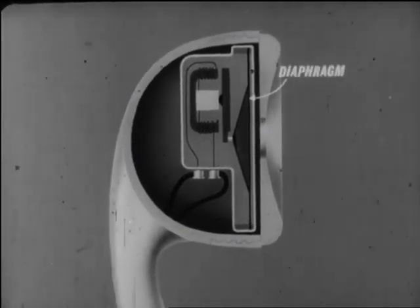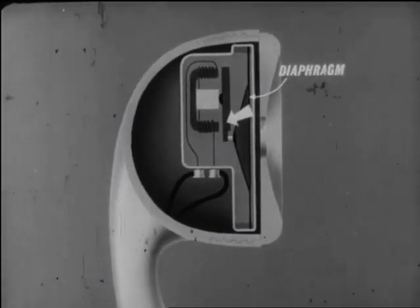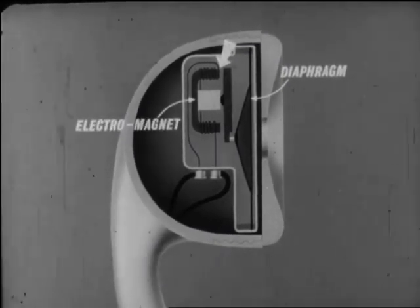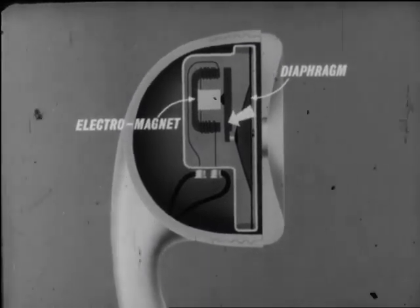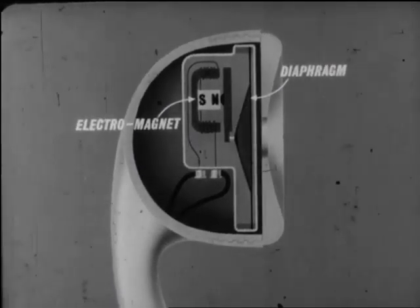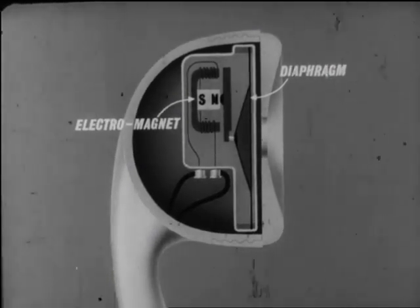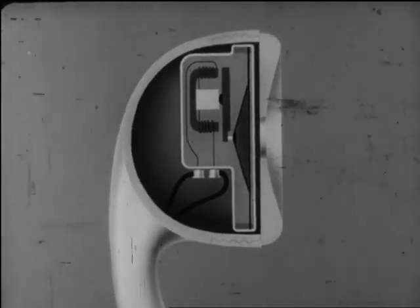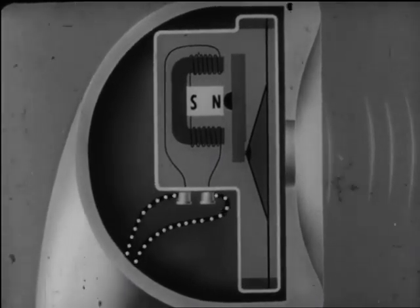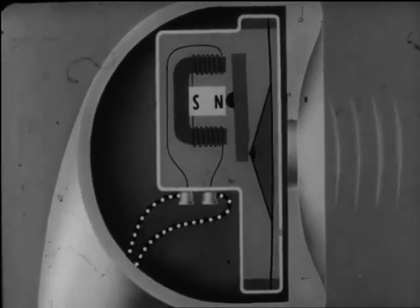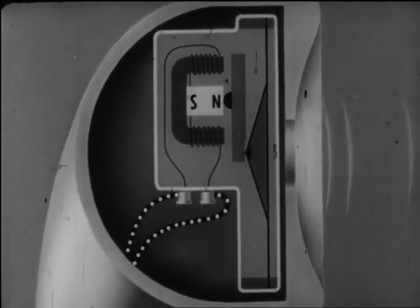The diaphragm is attached to an iron bar which is pivoted and mounted close to the poles of an electromagnet. The bar is called a rocking armature, and we use permanent magnetism in the electromagnet. In principle, the modern receiver is not unlike Bell's original, but it is very much more sensitive. Each fluctuation of the current varies the attraction of the armature, making it and the diaphragm vibrate at the same frequency, so reproducing the original sound.